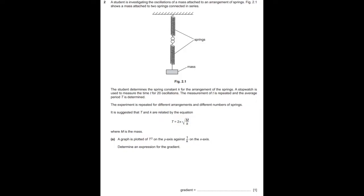Read the question. It says that a student is investigating the oscillations of a mass attached to an arrangement of springs. Figure 2.1 shows a mass attached to two springs connected in series. The student determines the spring constant k for the arrangement. A stopwatch is used to measure time t for 20 oscillations. The measurement of t is repeated and the average period T is determined. The experiment is repeated for different arrangements and different numbers of springs. It is suggested that T and k are related by the equation T equals 2π√(m/k), where m is the mass. A graph is plotted of T² on the y-axis against 1/k on the x-axis. Determine the expression for the gradient.